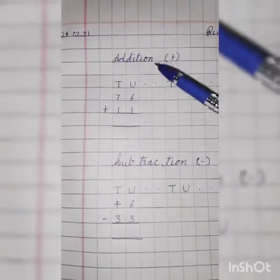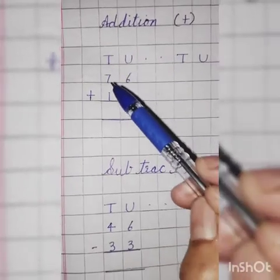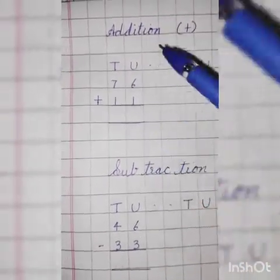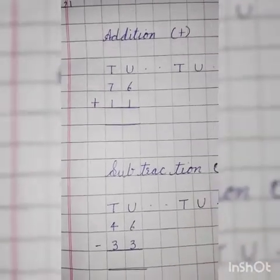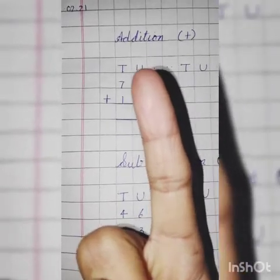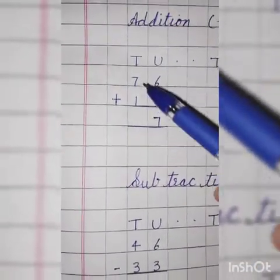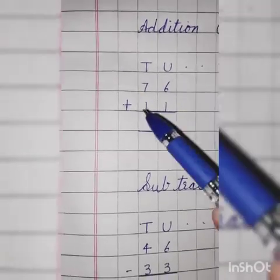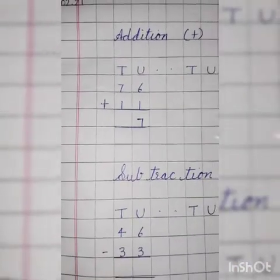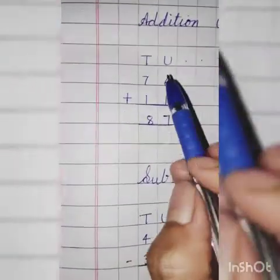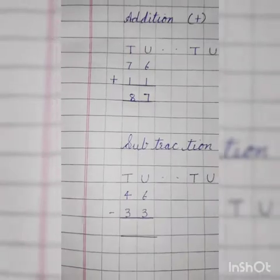Kids, practice of addition and subtraction. Mention today's date. Revision work. Unit and tens: 76 plus 11. First we will solve the unit side: 6 plus 1. 6 goes on head and 1 on finger. What comes after 6? Yes, 7. Now the tens side: 7 plus 1. 7 goes on head and 1 on finger. What comes after 7? 8. So 76 plus 11 equals 87.